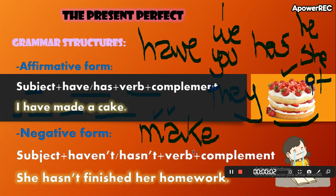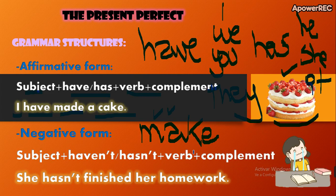We see the result and there is a connection between the past and the present. Let's see the negative form. Subject, haven't or hasn't — negative form. Haven't, hasn't. The verb in participle — el verbo en participio también — and then the complement.